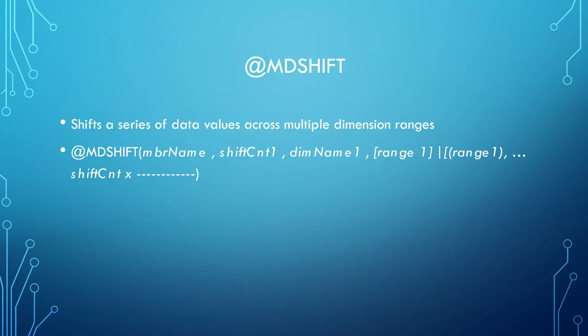Now the range that's optional, that's the range for the dimension. And then you can keep going with multiple different dimensions, so you can do another shift count and then another dimension after that.